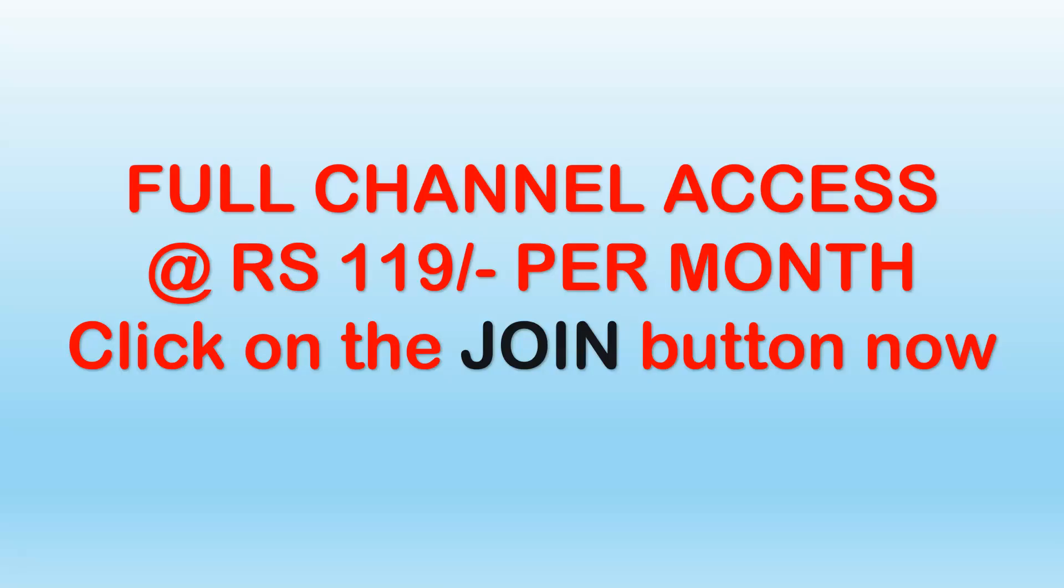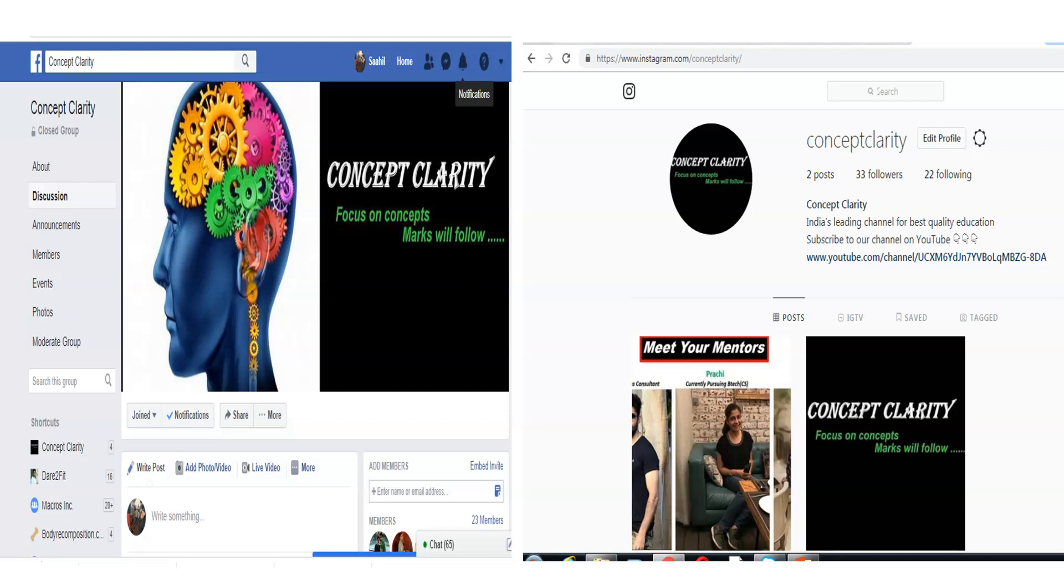An important announcement: if you need Bio, Merchant of Venice, Tempest and History Civics chapters available, you have to pay Rs 119 per month. For that, click on the join button now. We have mentioned the membership link in this video in the description box. And don't forget to follow us on Instagram and Facebook.